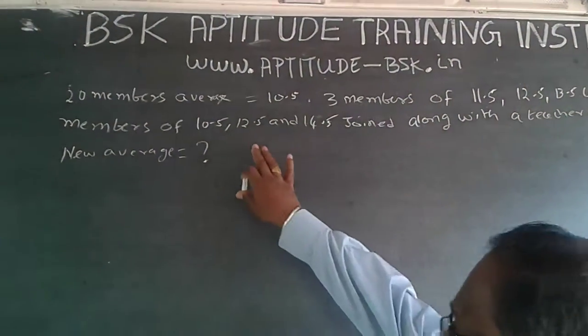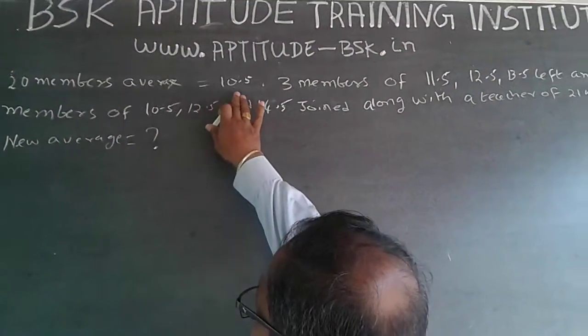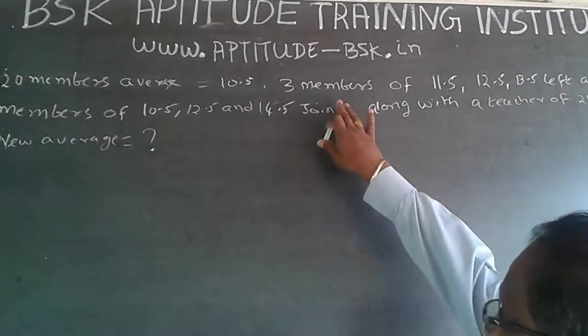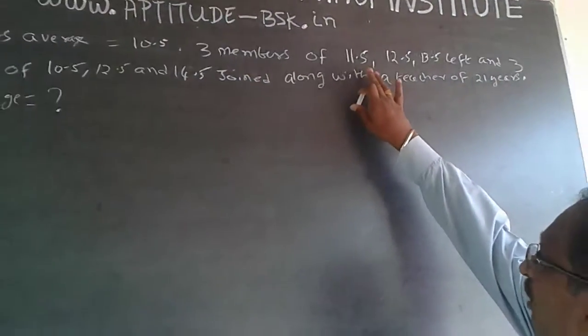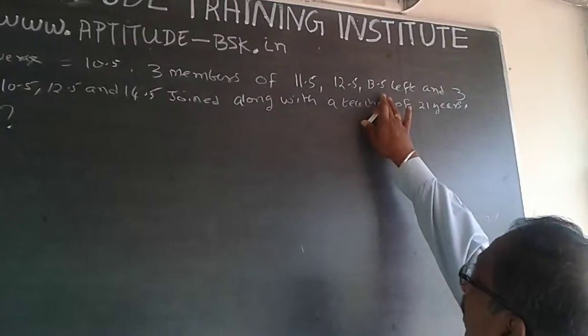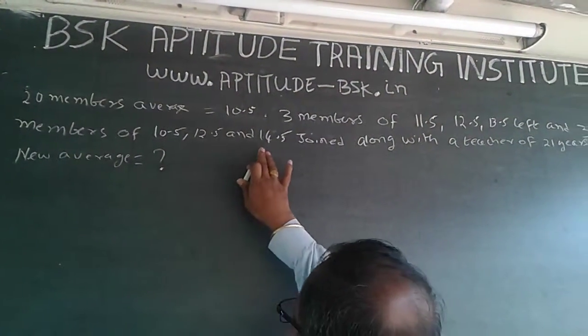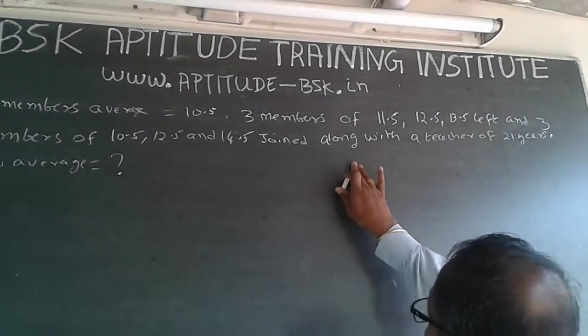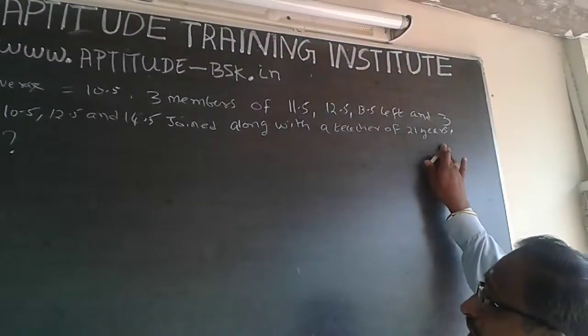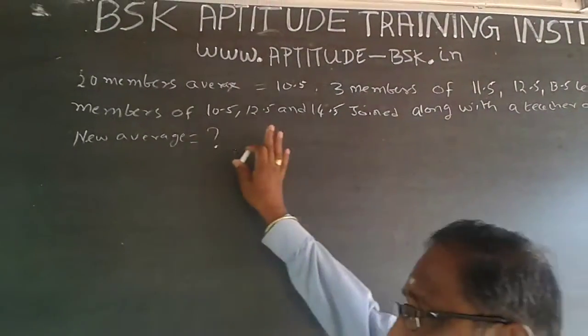The question is: 20 members average is equal to 10.5. 3 members of 11.5, 12.5, 13.5 left, and 3 members of 10.5, 12.5, and 14.5 join along with a teacher of 21 years. New average is equal to what?